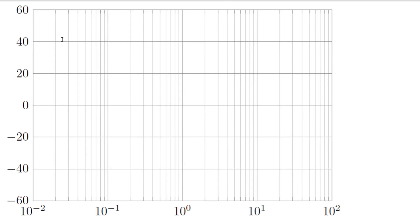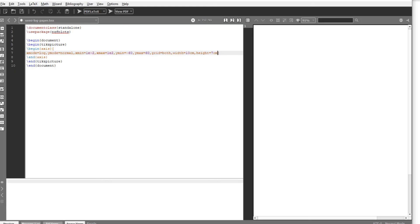This is called major grid style. So I want to change the color of major grid style. I can say major grid style equals and then within the curly brackets I can give the color black exclamation 50, which means roughly 50% black. This is the way you provide color. And now our graph paper is ready.